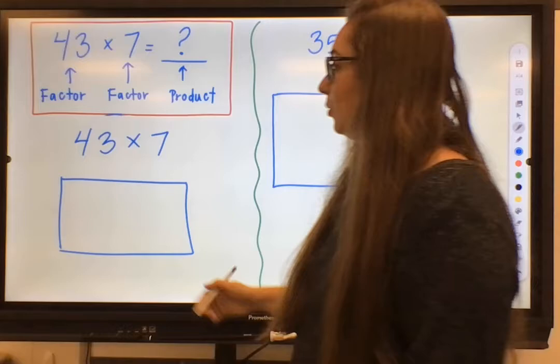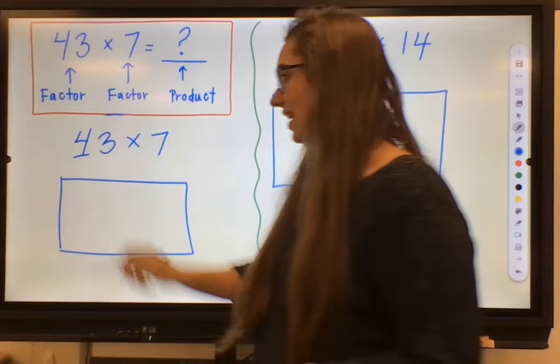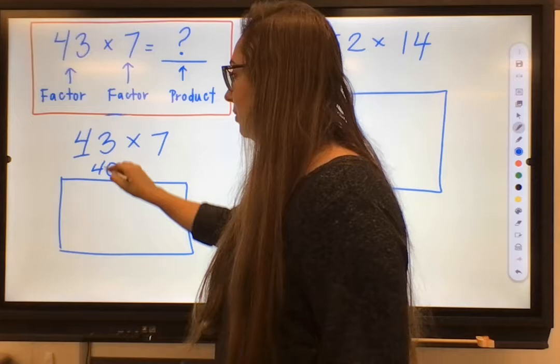So with these problems, we have to think of these numbers broken down into the numbers that they're made up of, kind of like looking at their place value. I recognize with this 43 that it has a 4 in the tens place, which tells me that it's made up of 40.